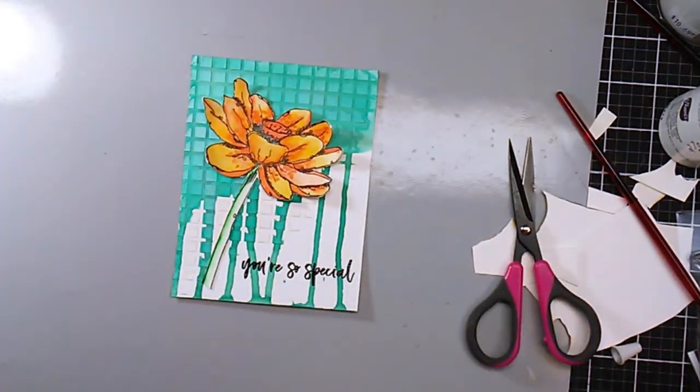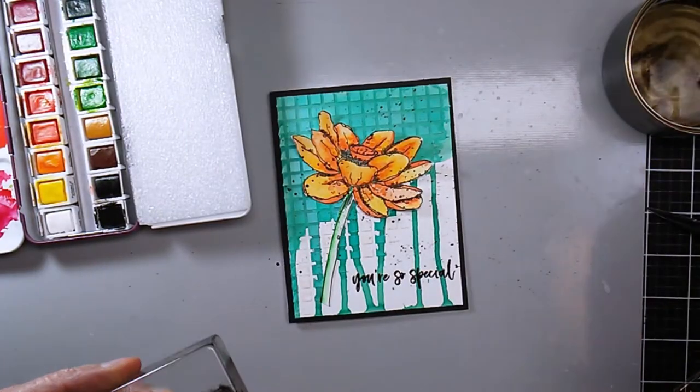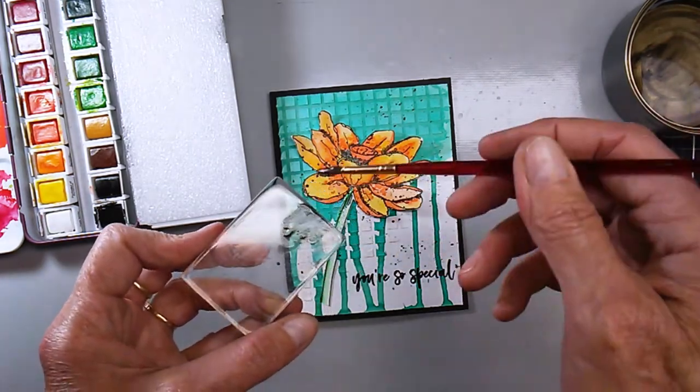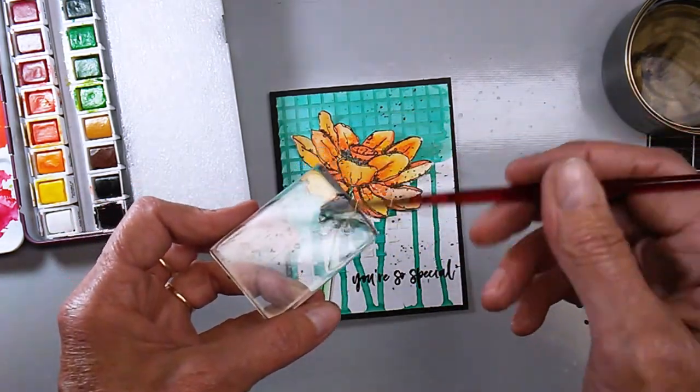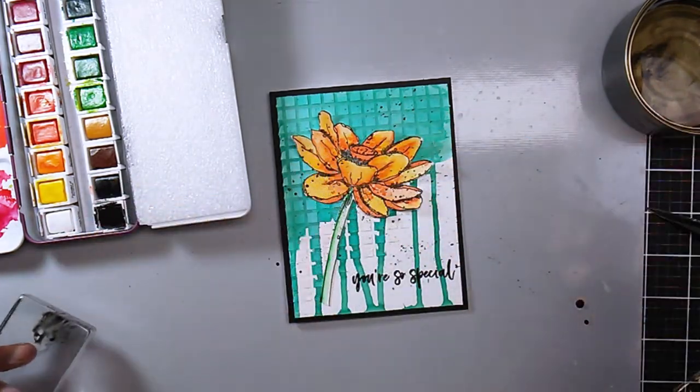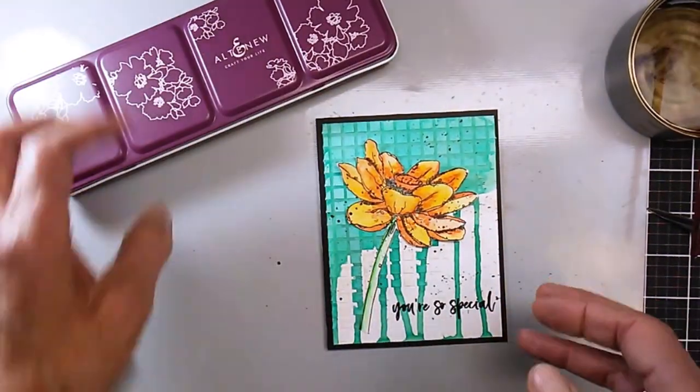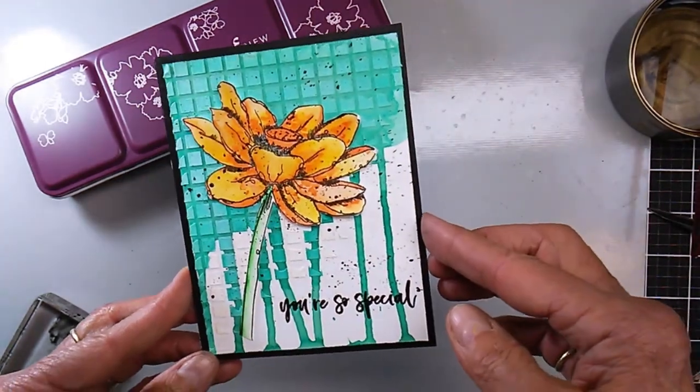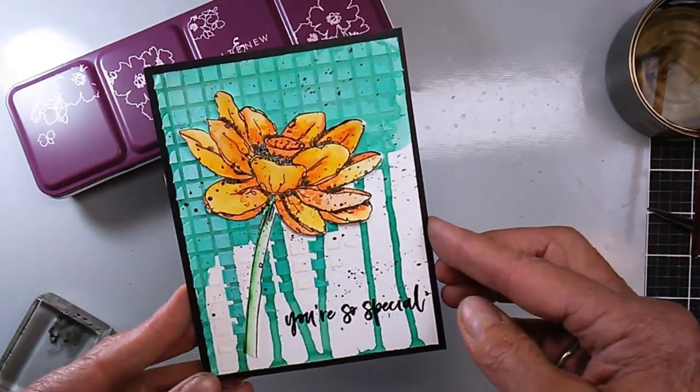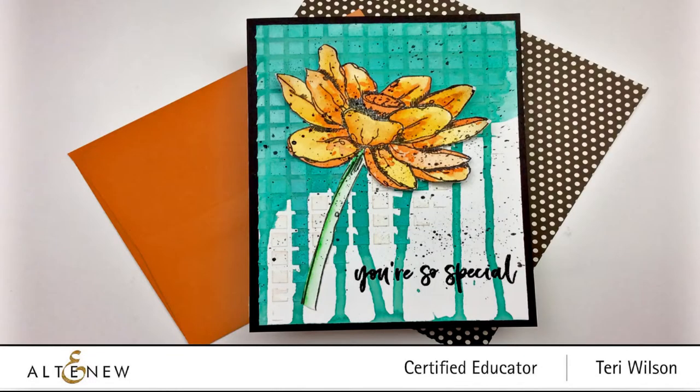There's my final card and I attached it with the black frame onto an A2 base. You can see here, I'm using my Altenew artist watercolors, the black, to do some splatters on the top to just kind of add a little extra to it. Here's the final card.